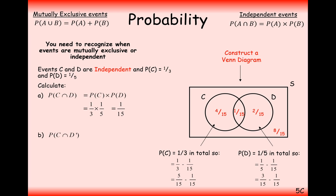We can now answer further questions. The probability of C and not D is just the C-only region, which is 4/15. The probability of not C and not D is the region outside both circles, which is 8/15.